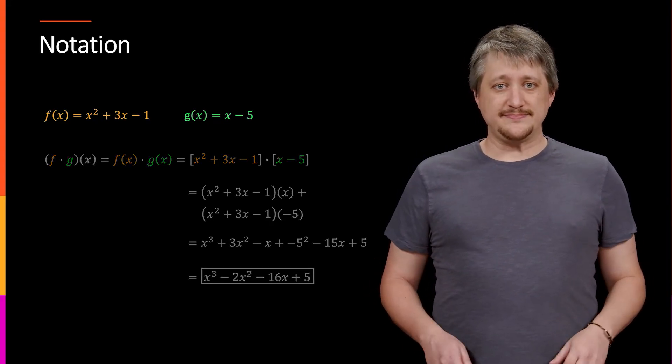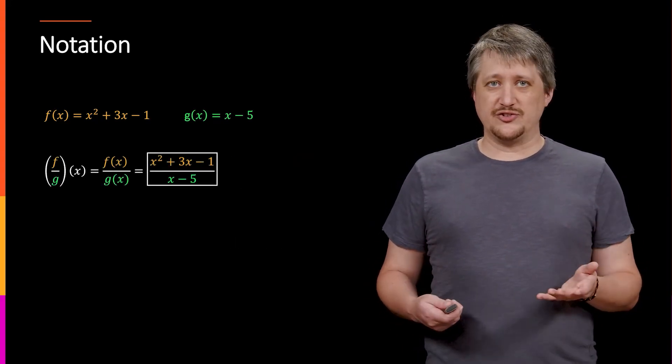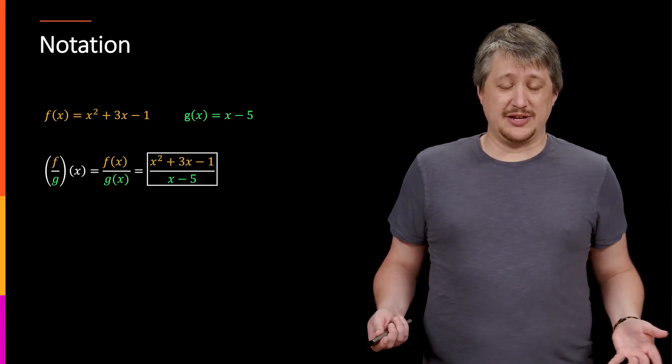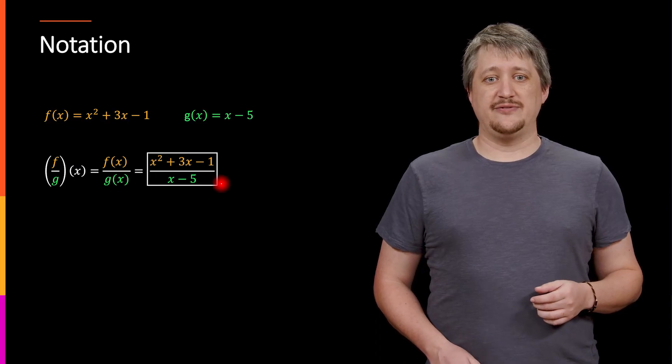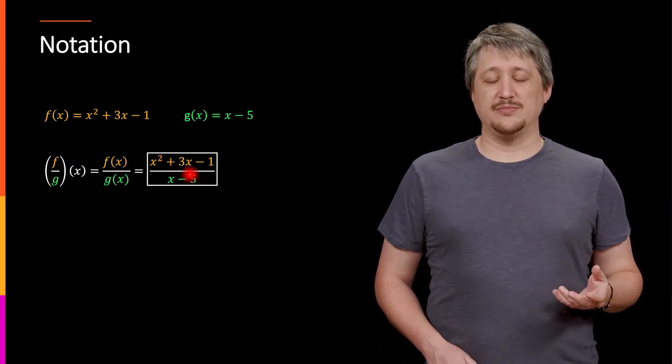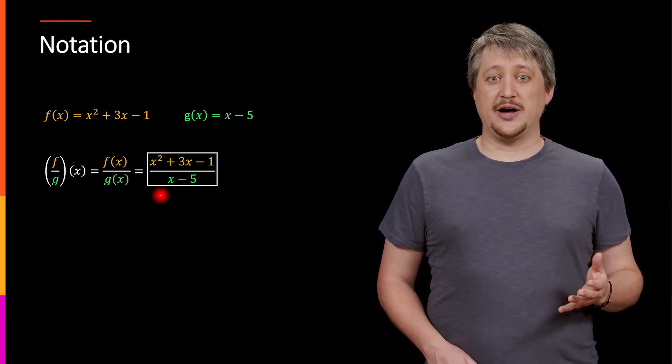Last but not least, division. So here, division works just how we would think it would. So we do the division of the function is the division of the rules. So we have f(x) in the top, the x² + 3x - 1, the g(x) in the bottom, x - 5.